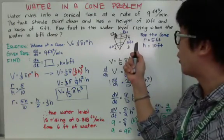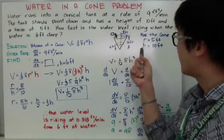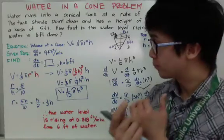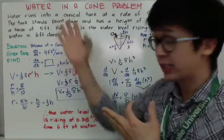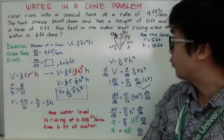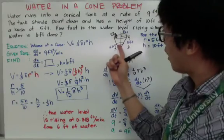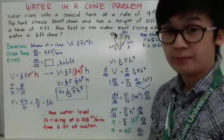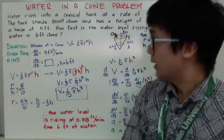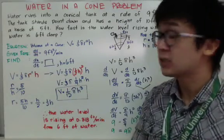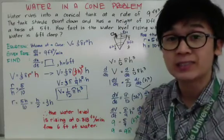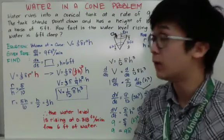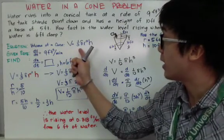Here's my summary for the cone. The height and radius ratio will be used later. We need to find the equation, the given rate, and what we need to find. What we need to find is how fast the water is rising in the conical tank — that's dH/dt, the derivative of height with respect to time. The equation is the volume of a cone, which is not explicitly given, so you need to know the formula: volume equals one-third pi r squared h.